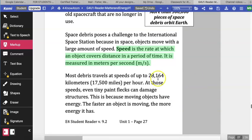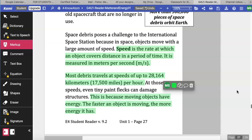Most debris travels at a speed of up to 28,164 kilometers or 17,500 miles per hour. At those speeds, even tiny paint flecks can damage structures. This is because moving objects have energy. The faster an object is moving, the more energy it has.